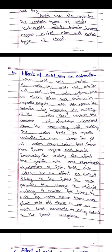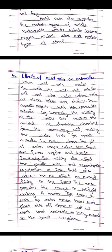Effect of acid rain on animals: acid rain also affects animals. When acid rain reaches the Earth's surface, the acid sinks into the soil and enters water systems such as rivers, lakes, and streams. This increases the amount of aluminium absorbed from the surrounding soil, making the water toxic for aquatic animals. In areas where the pH of water drops below 5, there are fewer crayfish or insects.